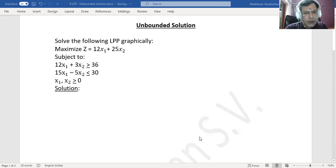So first let us convert the inequations to equations. Let L₁ be 12x₁ + 3x₂ = 36, call it equation 1. Let L₂ be 15x₁ - 5x₂ = 30.